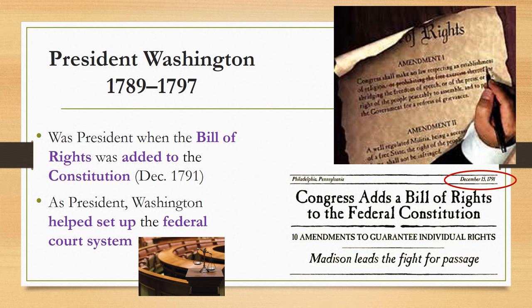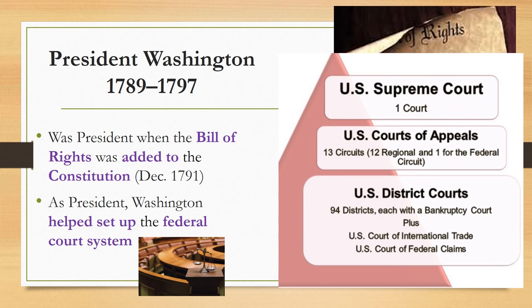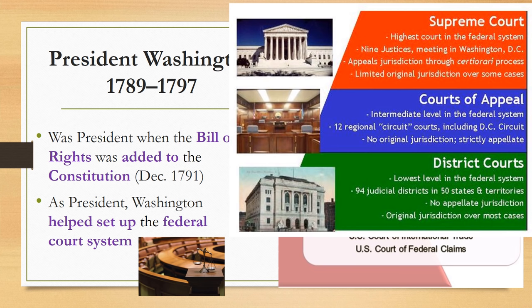Washington was president when the Bill of Rights was added to the US Constitution in December of 1791. As president, Washington helped set up the federal court system. The court system has three tiers: the US District Courts, the US Courts of Appeals, and the US Supreme Court.